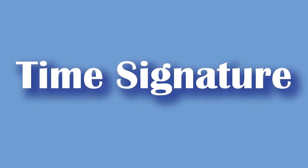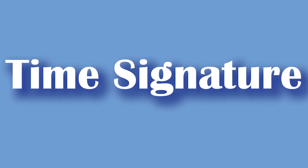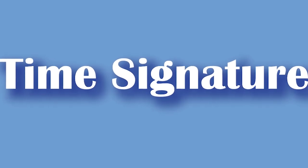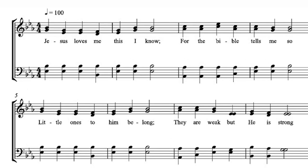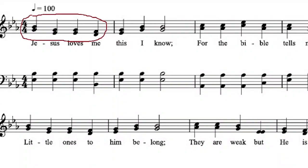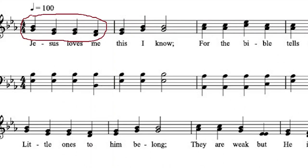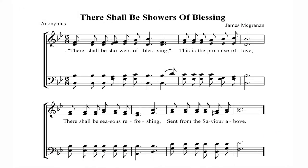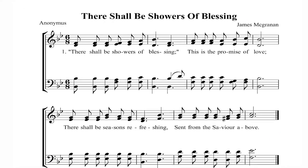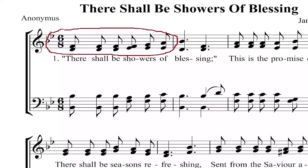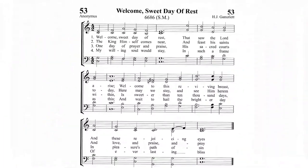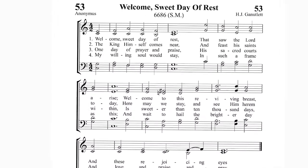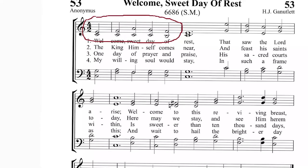In Lesson 16 we saw examples of the usage of bars for three different songs. In the first one, currently in view, the quarter note or crotchet takes one beat and there are four crotchets in each bar. In the second example, the eighth note or quaver takes one beat and there are six of them in each bar. The third example showed a half note or minim to be one beat with four of them within each bar.